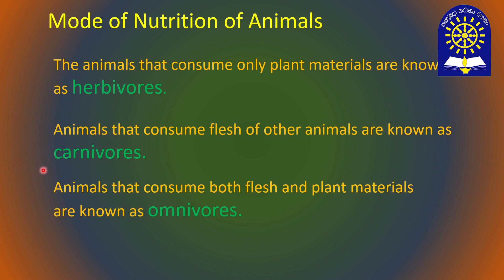Some animals consume both plant matter and animal matter. They are known as omnivores. Cat, dog, man, crow, rooster, and cockroach belong to omnivores.